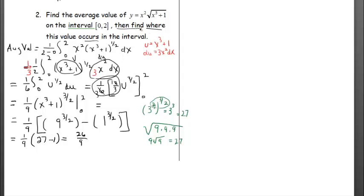To complete this, it says, then find where this value occurs. Well, this is a y value. So, what you'd have to do is plug in 26 ninths for y, and then maybe do a y1, y2 intersection. Then, this really becomes a calculator question.